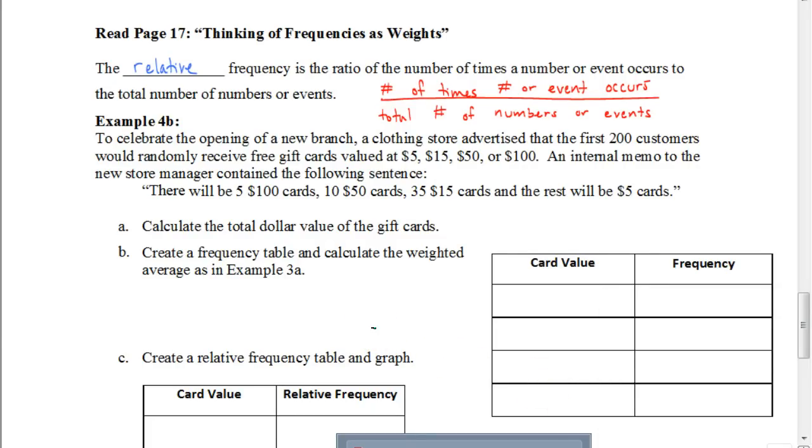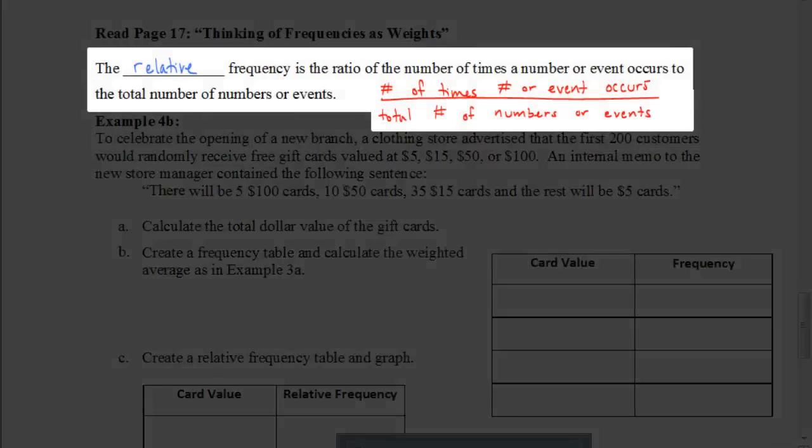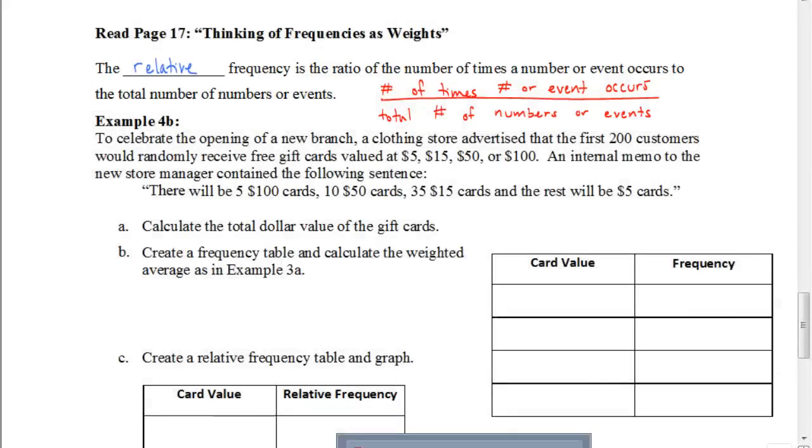You can see here that the relative frequency is defined as the ratio of the number of times a number or event occurs to the total number of numbers or events. A better way to look at that - remember, a ratio is a fraction, so you can define this term by writing out the fraction: the number of times the number or event occurs divided by the total number of numbers or events. So that is what a relative frequency is. Let's look at an example so you can see how we would do this.